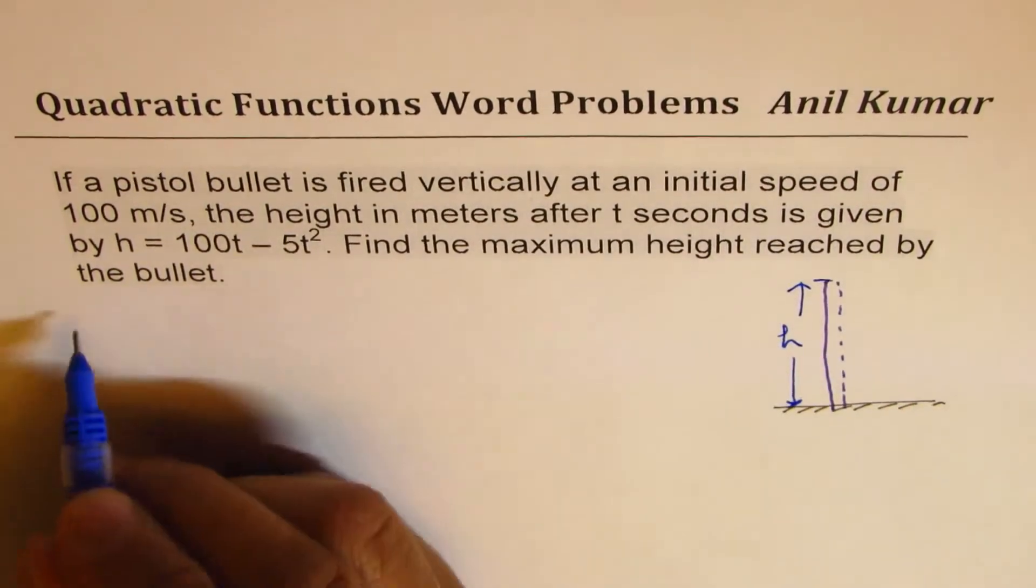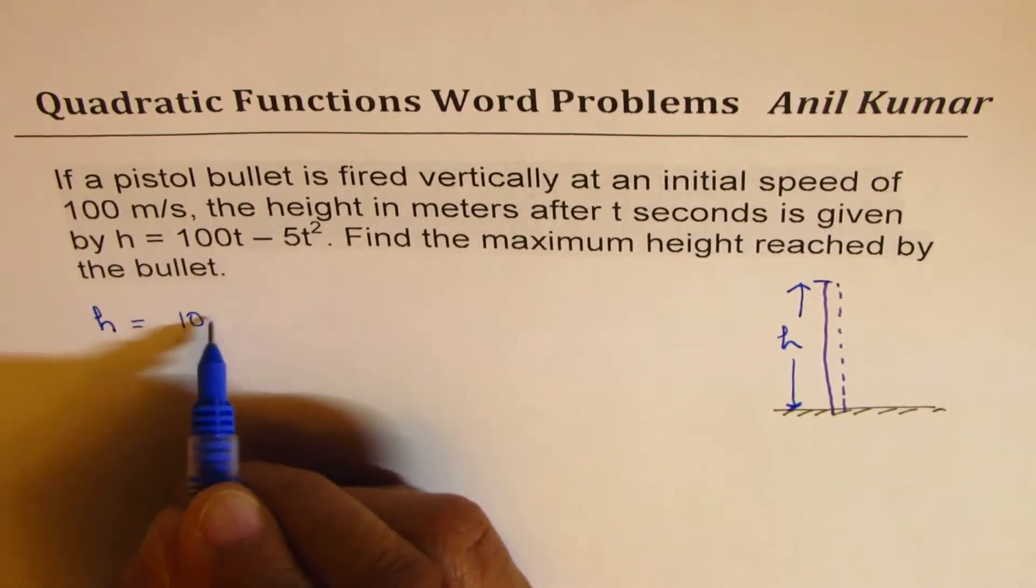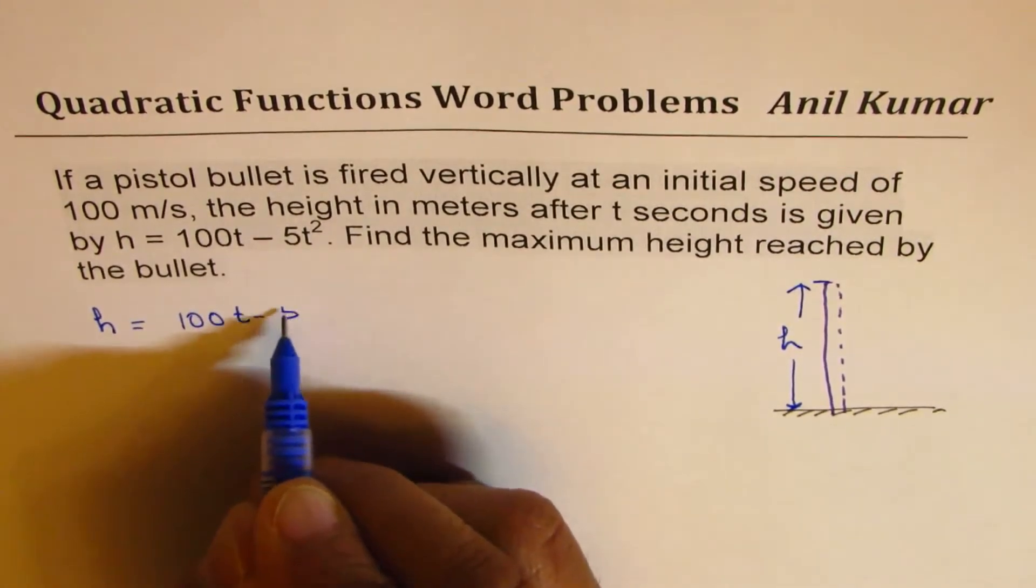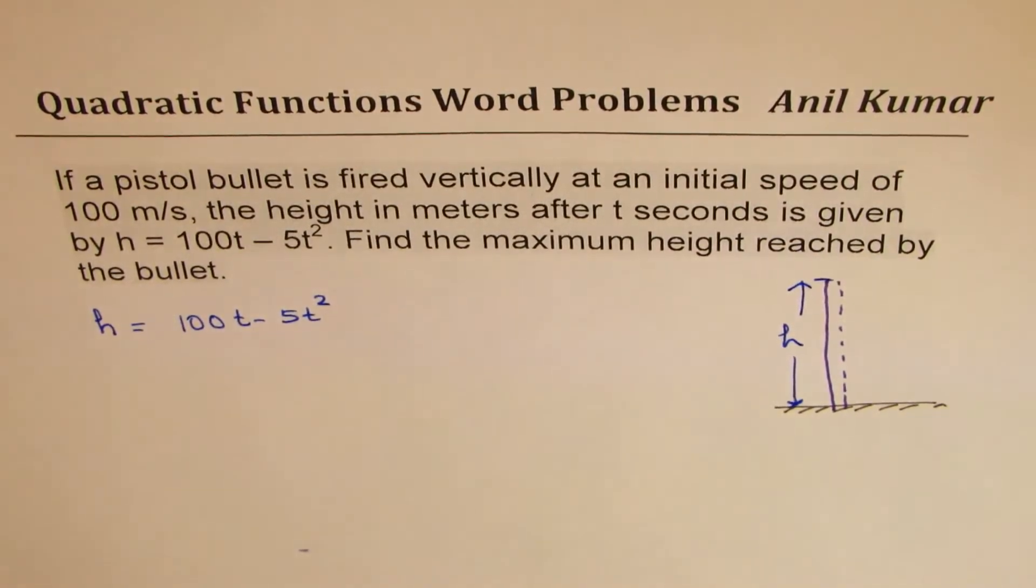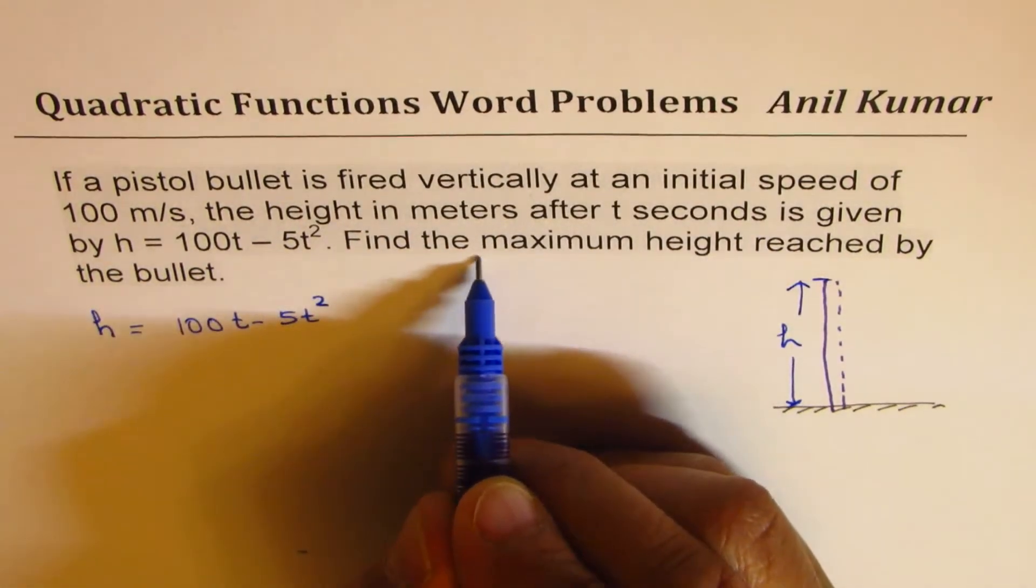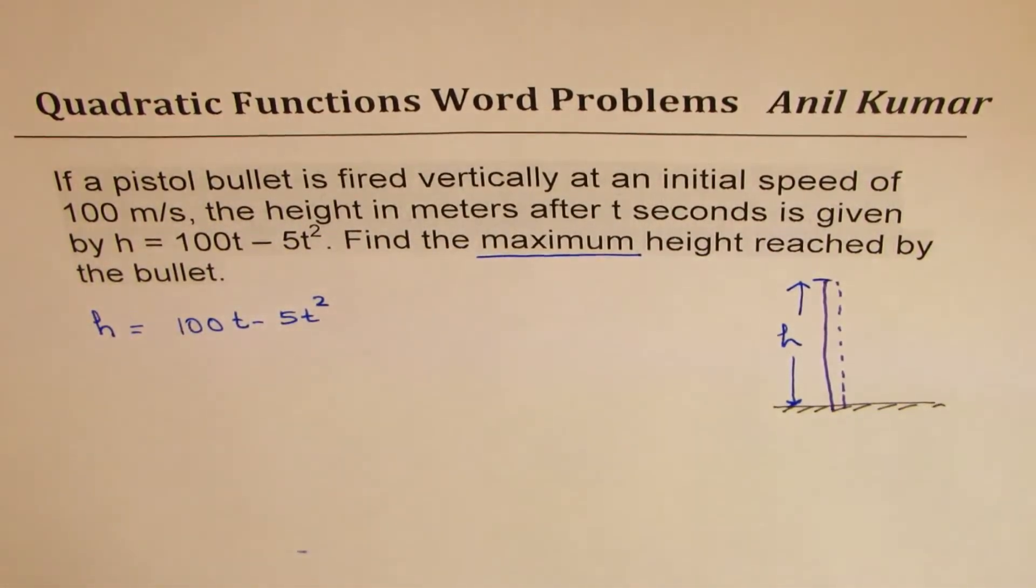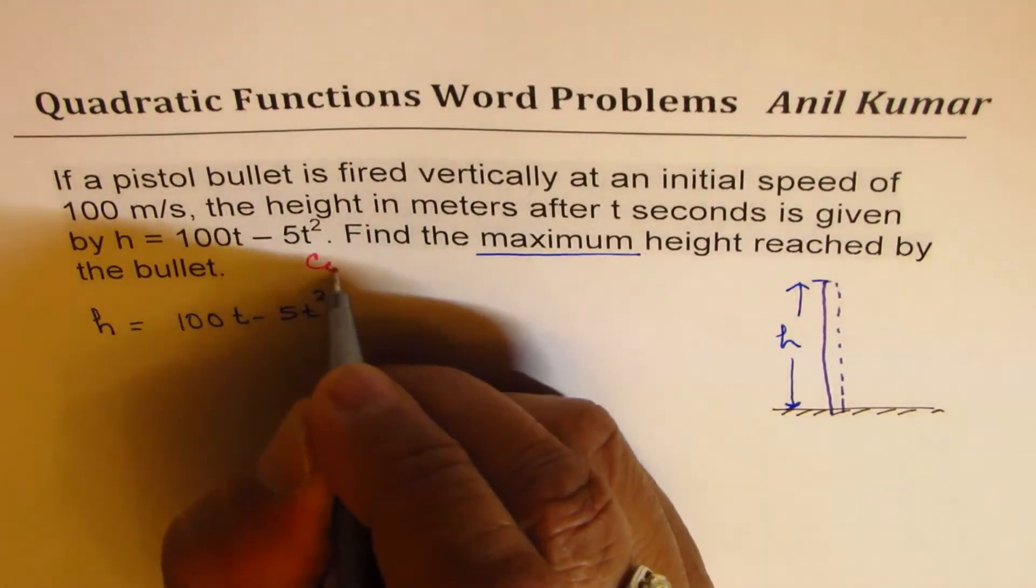The expression for this height h is given as 100t minus 5t squared. How will you find the maximum height? So whenever you read maximum, you don't have to think much. You have to do complete squares.